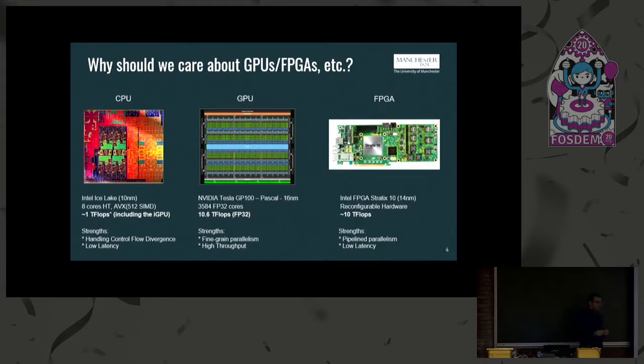Starting from a CPU on the left side, we can see a Nice Lake microarchitecture with eight cores and an integrated GPU. This microarchitecture can achieve with the GPU up to one teraflop performance, which is good. It is indicated for control flow execution, for branches, and for low latency requirements.